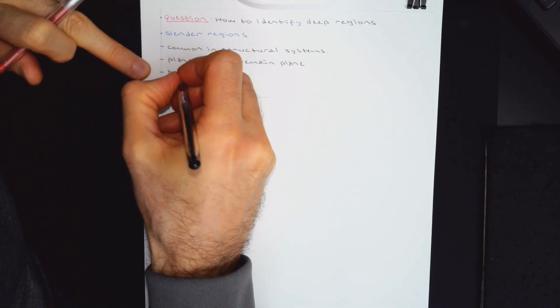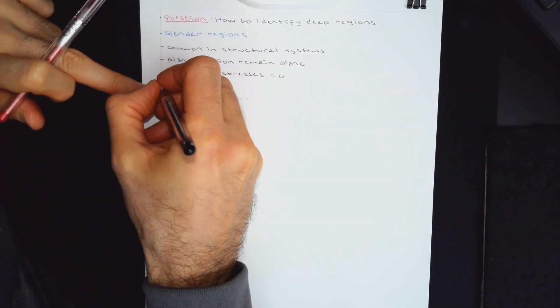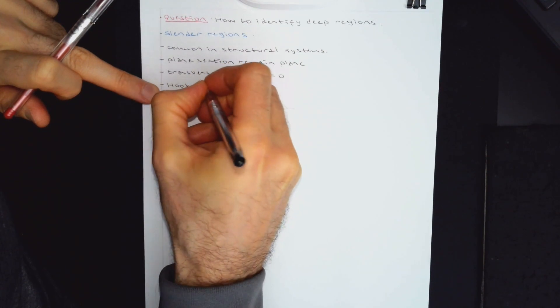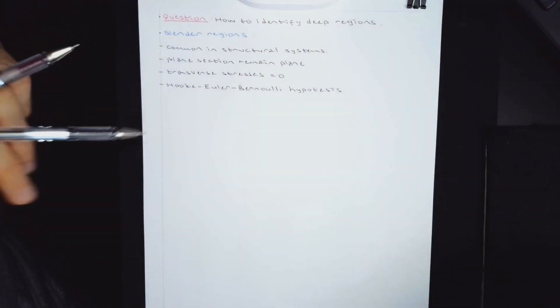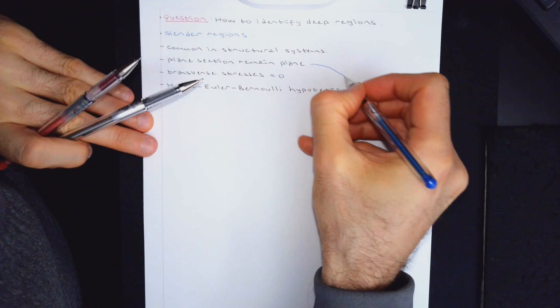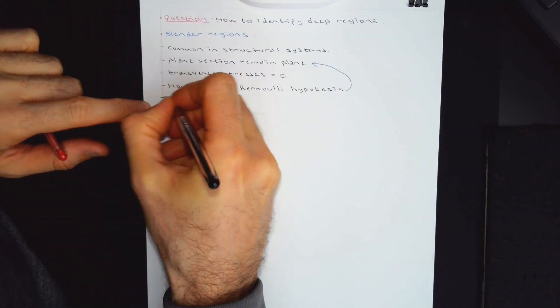Plane sections, transverse stresses equal to zero. Typically Hooke, Euler, Bernoulli. This is actually, this hypothesis is this. We use sectional method.